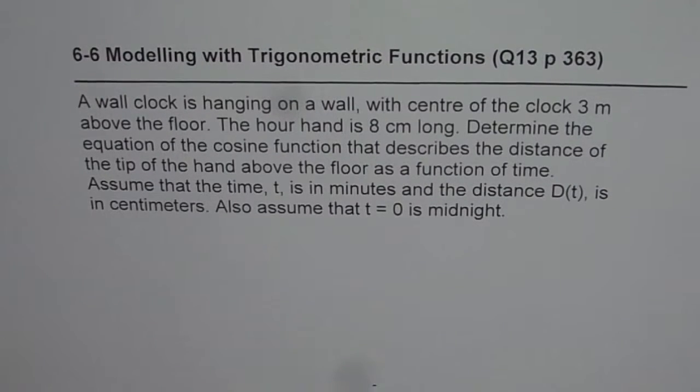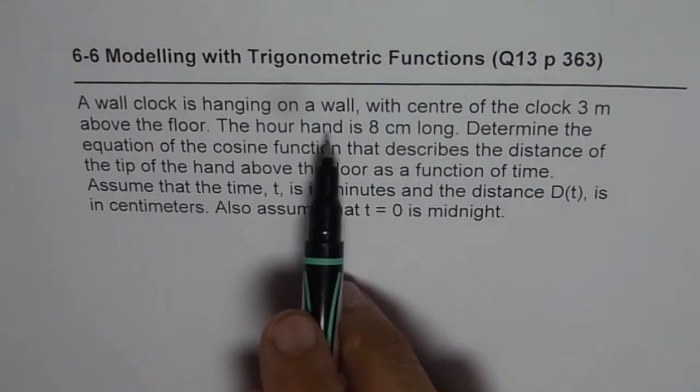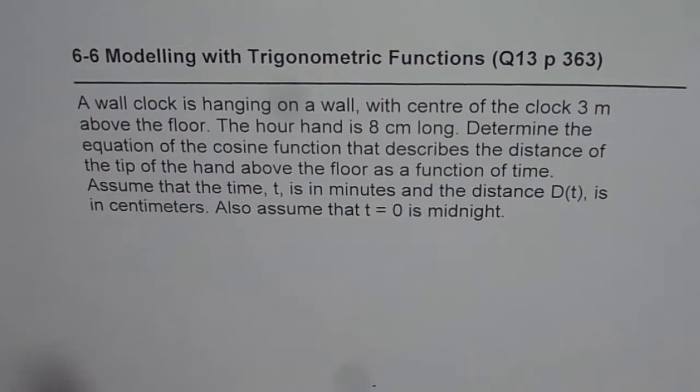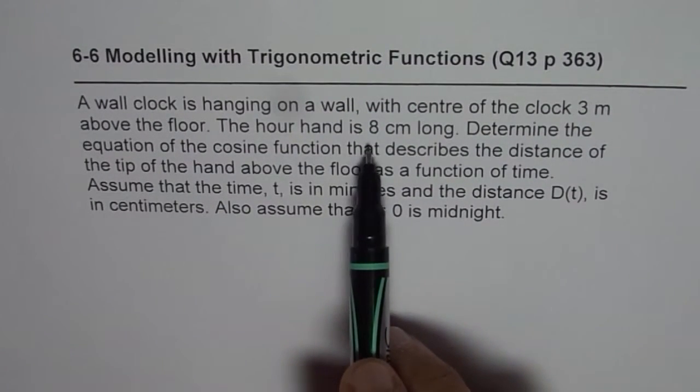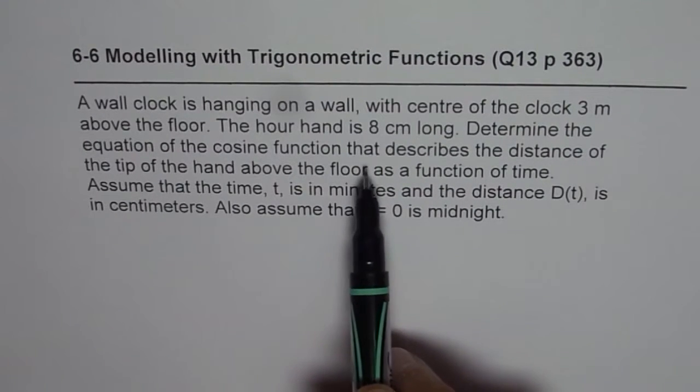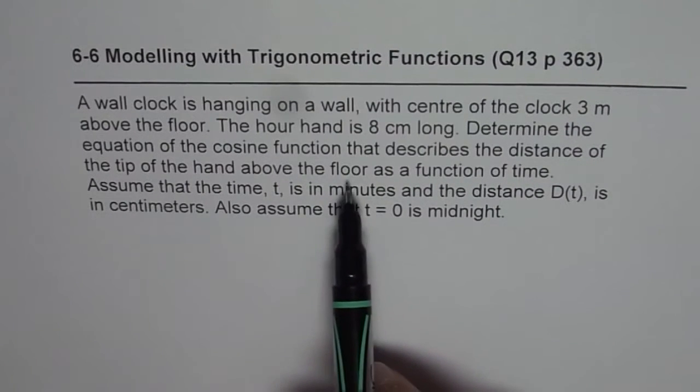6.6 modeling with trigonometric functions. I am Manil Kumar sharing with you some questions from the book Nelson. It is question 13 page 363 as requested by my subscriber John. The question here is, a wall clock is hanging on a wall with center of the clock 3 meters above the floor. The hour hand is 8 centimeter long.